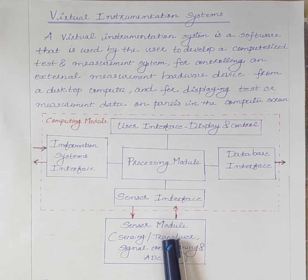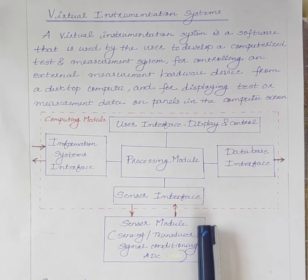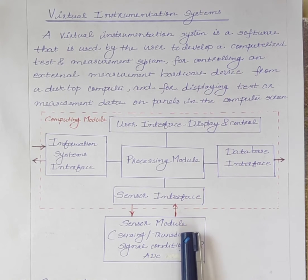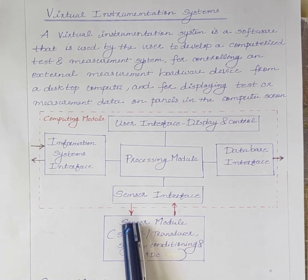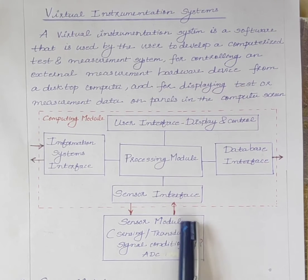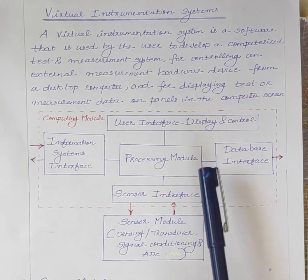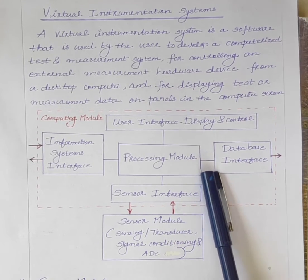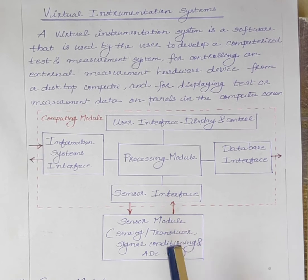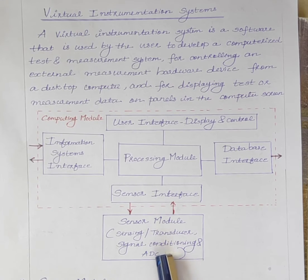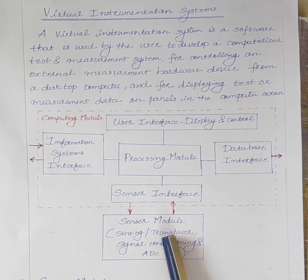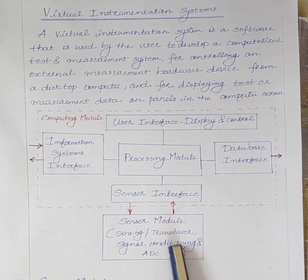The first one is the sensor module. The main functions of the sensor module are: first, to interface the virtual instrument to the external world; and second, transforming the measured signals into computer-readable form. Therefore, a sensor module consists of three main parts: sensing or transducer, signal conditioning, and analog-to-digital converter. The transducer converts physical signals into electrical signals and passes them to the signal conditioning unit.